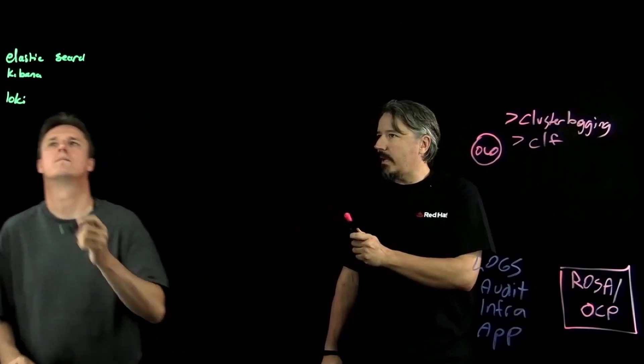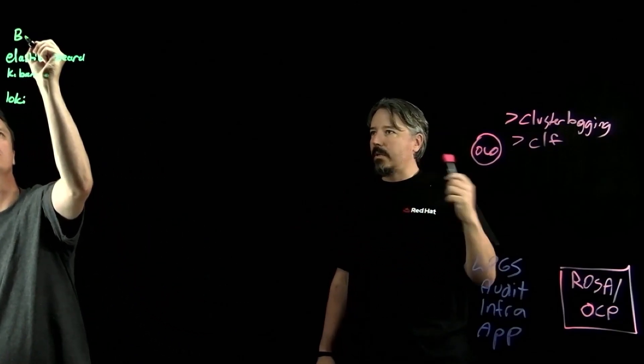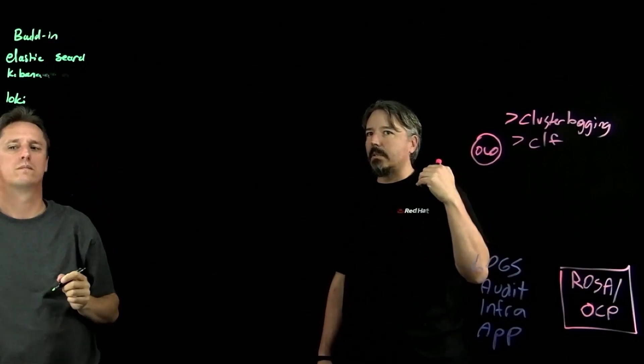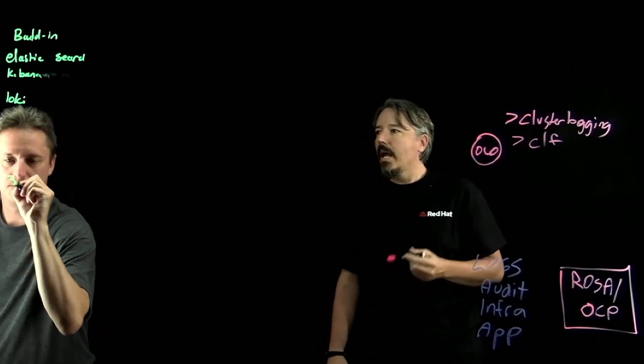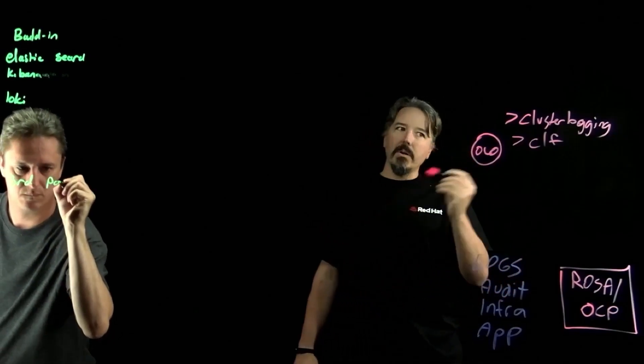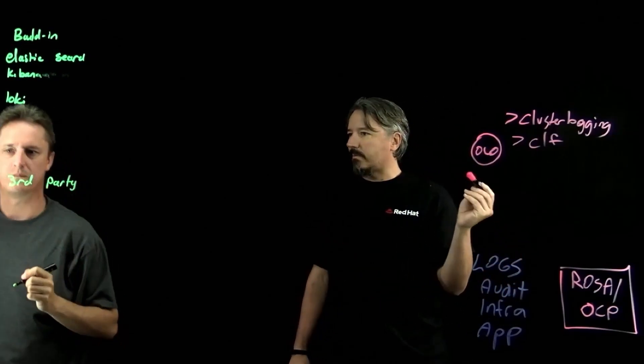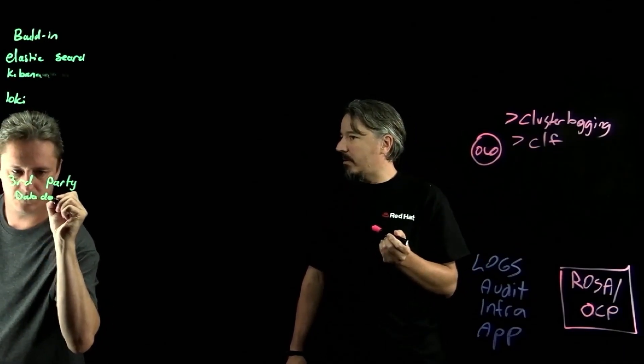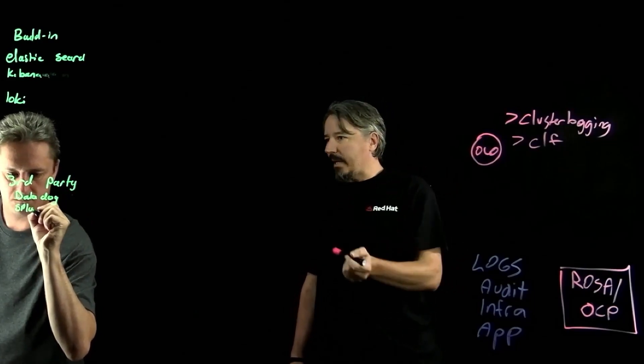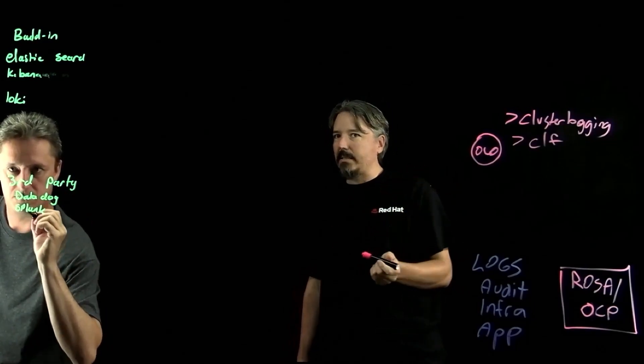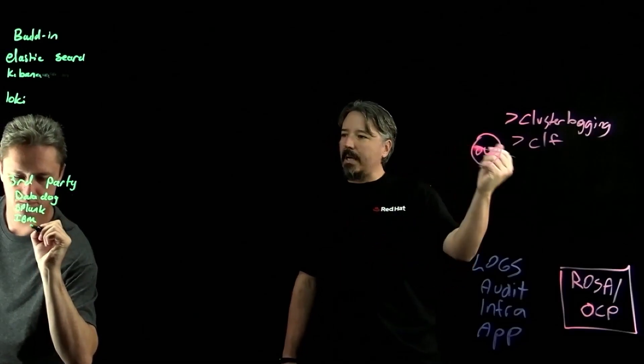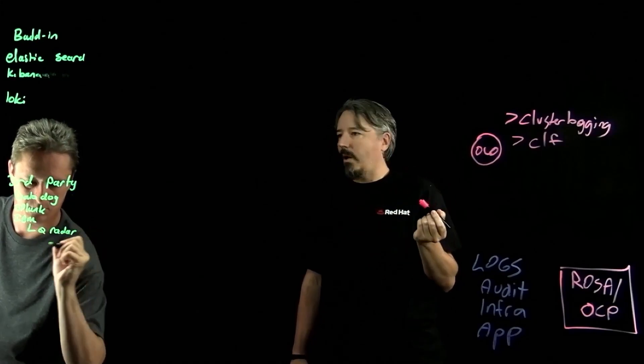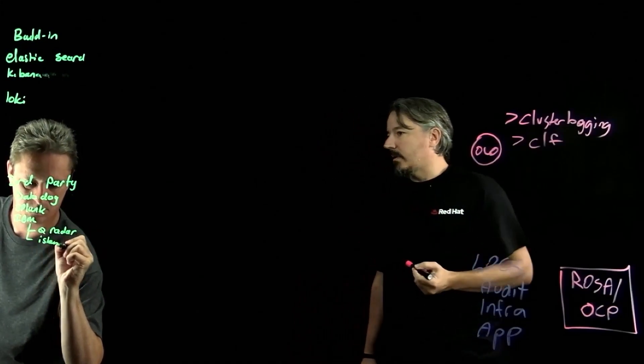The other thing is you mentioned bringing your own Elasticsearch, you can also bring in say Datadog or Splunk or Qradar third parties, and a lot of those are not through the cluster log forwarding but are done by an operator that's maintained by that third party. So Datadog has an operator, Splunk has an operator, and I think IBM has an operator for Qradar and so you would bypass cluster log forwarding and you would deploy the operator through OperatorHub and get your logs that way.